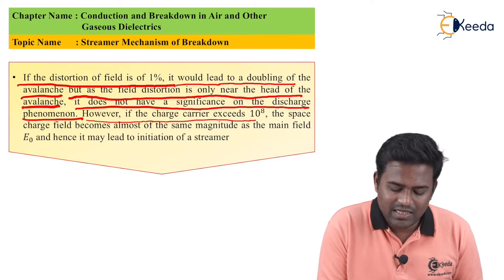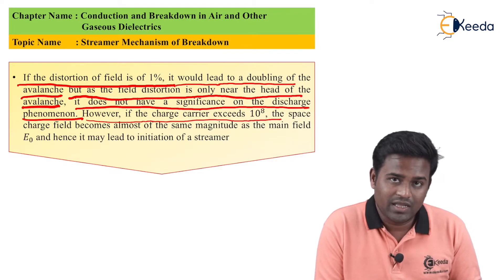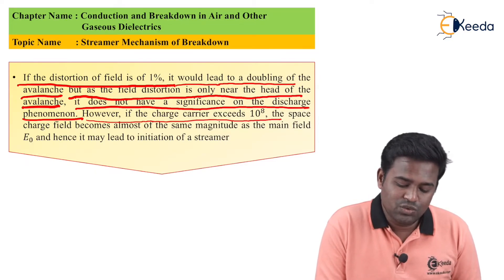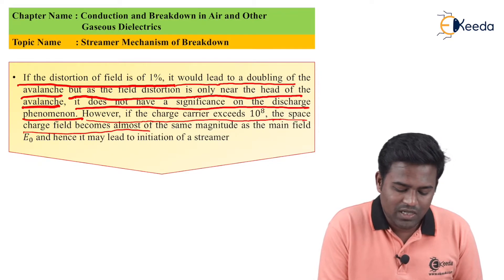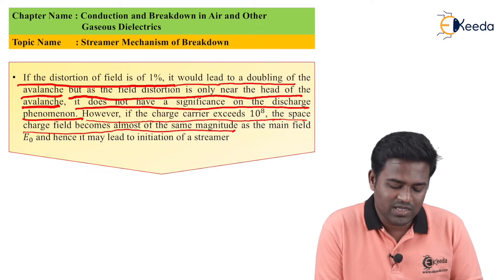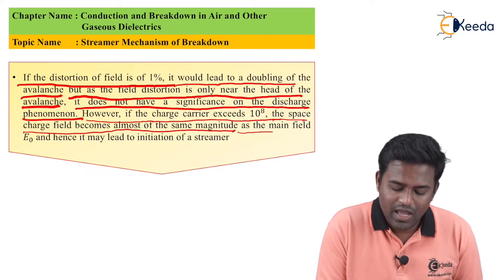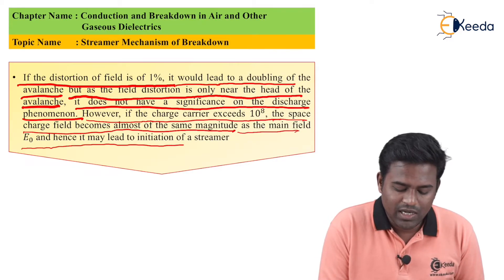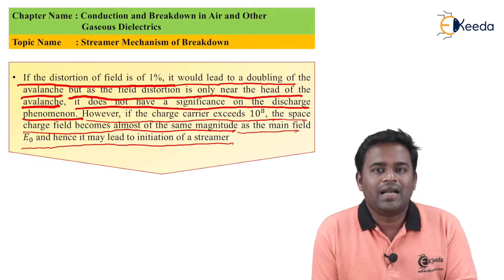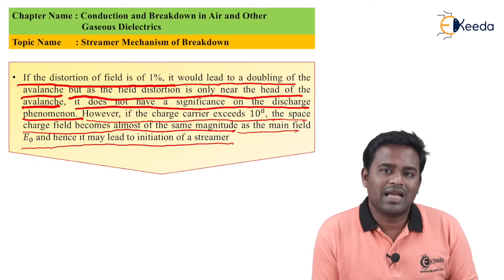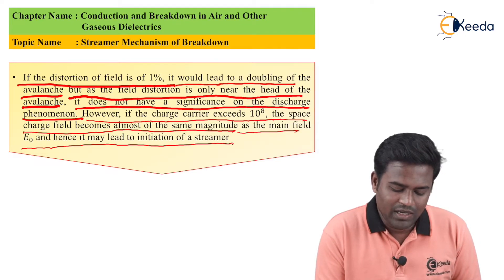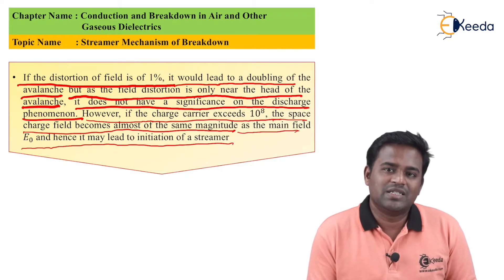However, if the charge carrier exceeds 10 raised to 8 — meaning the amplification in the gas chamber reaches 10^8 — the space charge field becomes almost the same magnitude as the main field E0, and hence leads to initiation of the streamer. The streamer, which involves ultraviolet light initiating a cathode ray, will be initiated by the main field E0, leading to the initiation of the streamer.